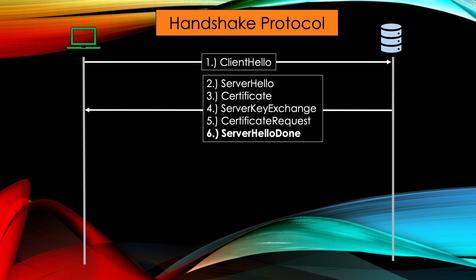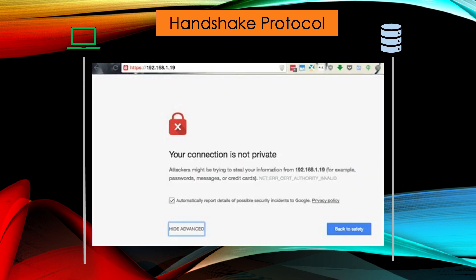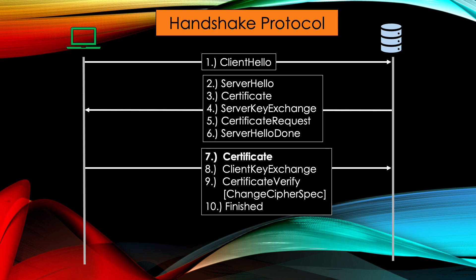SERVER HELLO DONE triggers the client to validate the certificate regarding temporal or other parameters. You have probably seen this message before, which indicates a TLS certificate that has not been renewed in a timely manner. But for now, let's assume the certificate is in fact valid. Now it's again the client's turn. If he was prompted for his own certificate, he sends it to the server. With CLIENT KEY EXCHANGE, the client sends the pre-master secret encrypted to the server.